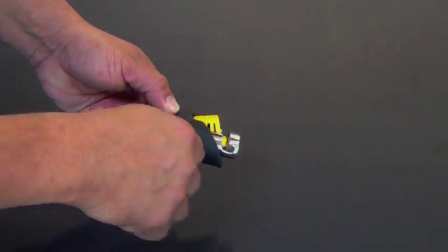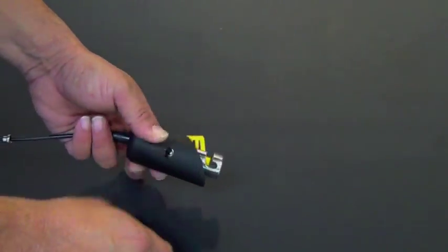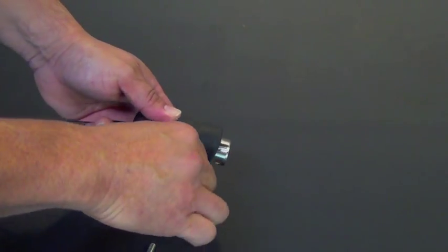begin by taking the number 122 1/8th hex key that comes in your hardware pack and remove the two side securing screws. Set them aside for later reinstallation.